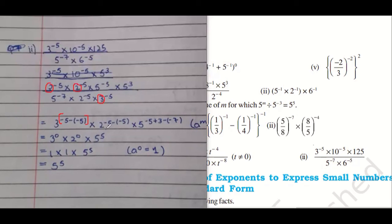2 is here and here. So 2, put the bracket. So 2 power minus 5 minus minus 5. Very good. Now let us focus on 5.